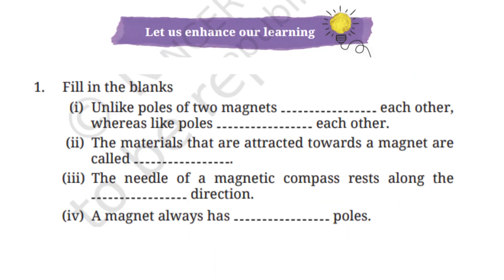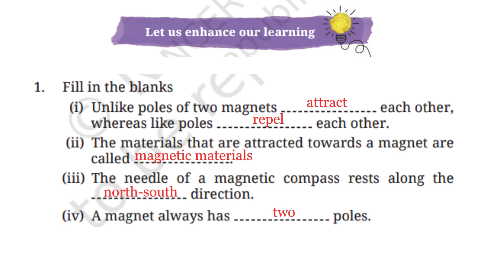Question 1: Fill in the blanks. Unlike poles of two magnets attract each other, whereas like poles repel each other. The materials that are attracted towards a magnet are called magnetic materials. The needle of a magnetic compass rests along the north-south direction. And a magnet always has two poles — north pole and south pole.